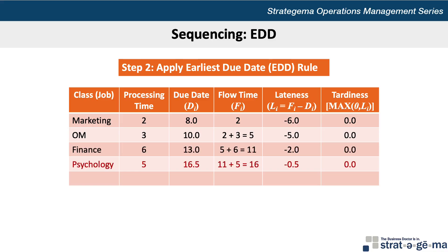Last is the psychology assignment, which is the last assignment due based on time. It takes 5 hours to complete and is due at 16.5 hours past midnight. The flow time is 16 hours, and the lateness is negative 0.5, which makes the tardiness 0. The average flow time is 8.5 hours, the average lateness is negative 3.38 hours, and the average tardiness is 0.